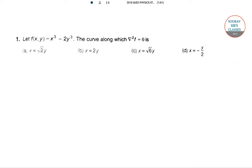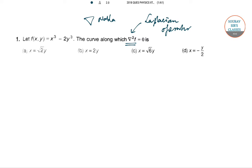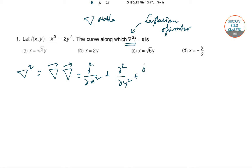The first question: f equals x⁴ minus 2y⁴. We need to find the curve along which ∇²f equals 0. This operator is called the Laplacian operator — the symbol ∇² is the Laplacian operator. By the Laplacian operator we can proceed in this way: ∇² equals del²/dx² plus del²/dz².